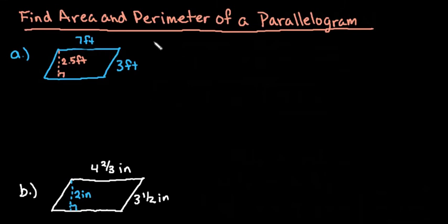Let's start with this first one here. Remember that to find the perimeter, you simply add up all the sides. So you could just do 7 plus 3 plus 7 plus 3. Remember that in a parallelogram the opposite sides are equal to each other, or you can say that it's 2 times the base plus 2 times the side length.